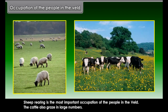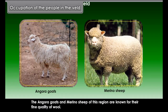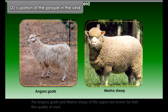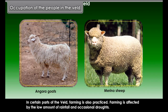Main crops in the Veld: Various crops like maize, fruits, and tobacco are grown here in plenty. Maize is the chief cash crop and large quantities are exported, so the area is known as the Maize Triangle.